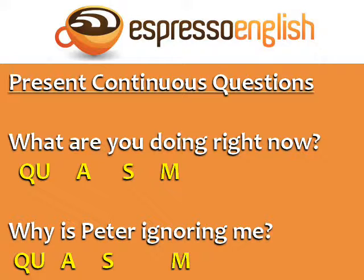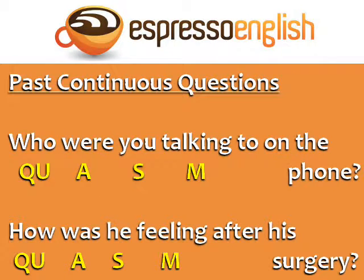Here are two questions in the present continuous: 'What are you doing right now?' and 'Why is Peter ignoring me?' It's the same formula, but the auxiliary verb is a form of the verb 'to be' — 'are' or 'is' — instead of 'do' or 'does'.